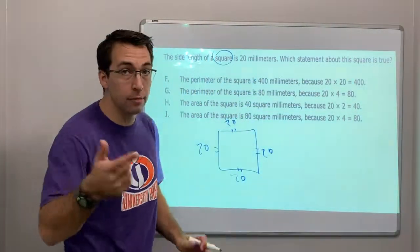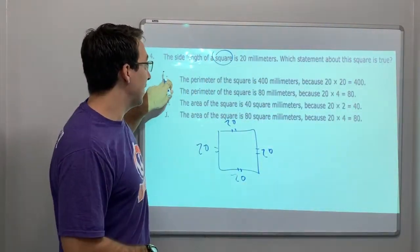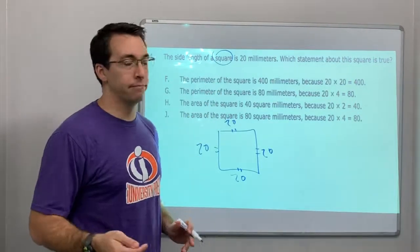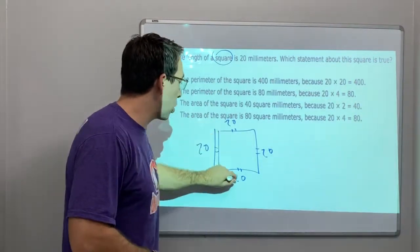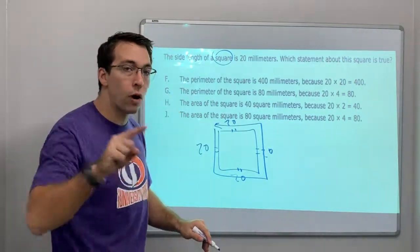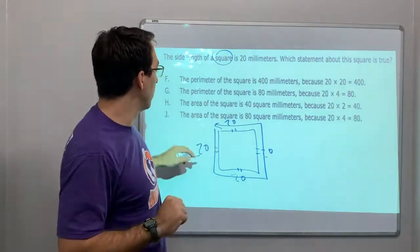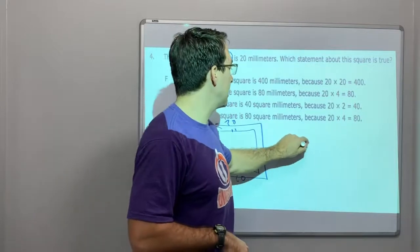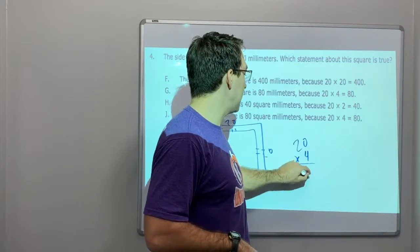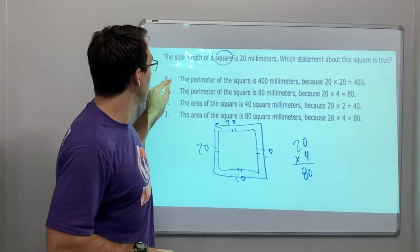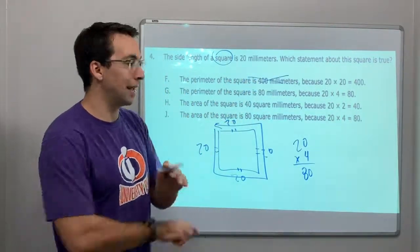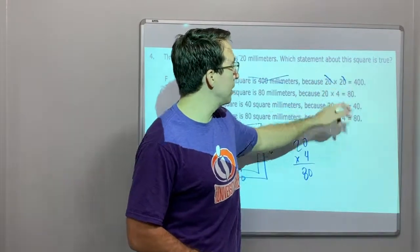Which statement is true about the square? Vocab — gotta know vocab. Perimeter equals all the way around that object. So perimeter would be 20 times 4, which is 80. Our perimeter is 80. Answer choice F says the perimeter is 400 millimeters — that is wrong, because 20 times 20 is 400, not 20 times 4.